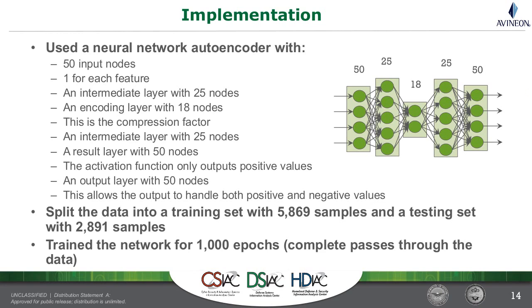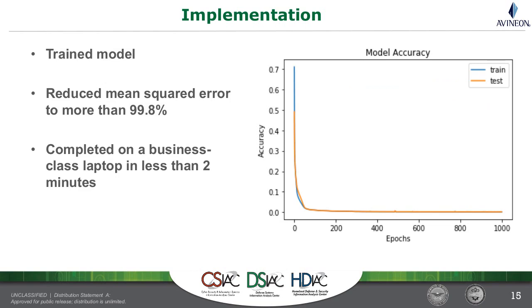This chart shows neural network accuracy over training. The network is modeling normal system performance and is able to do so quite quickly and very effectively. It reduces the mean squared error between output and input to a very low amount. We were very satisfied with the initial result. Notably, we were able to do this without significant hardware investment — trained on a business-class laptop in less than two minutes. For neural network problems with large datasets that wouldn't be possible, but for this one it was approachable.